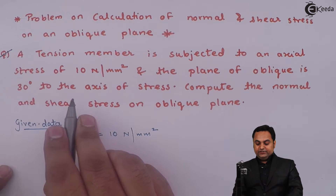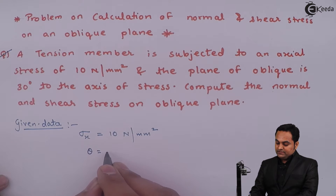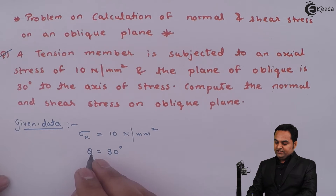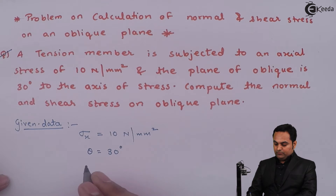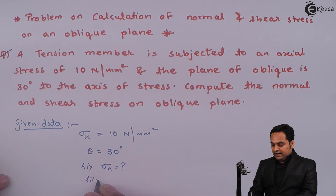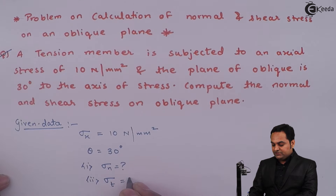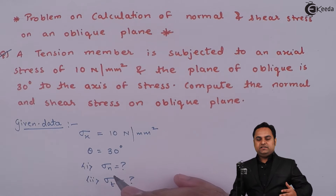The oblique plane is inclined at 30 degrees to the axis of stress, so theta is 30 degrees. We have to compute the normal and shear stress on the oblique plane — that is, the normal stress and the shear stress, also called the tangential stress, on this oblique plane.